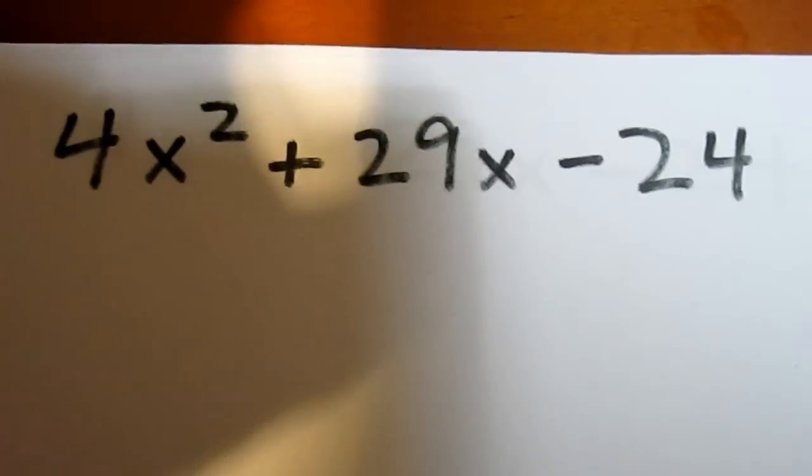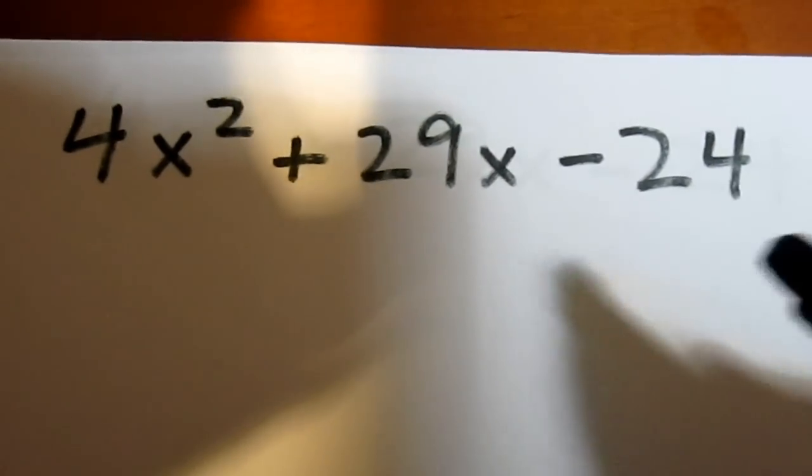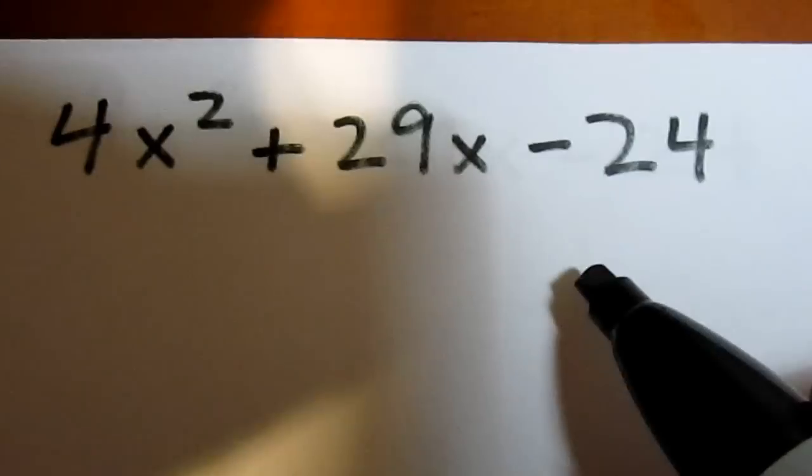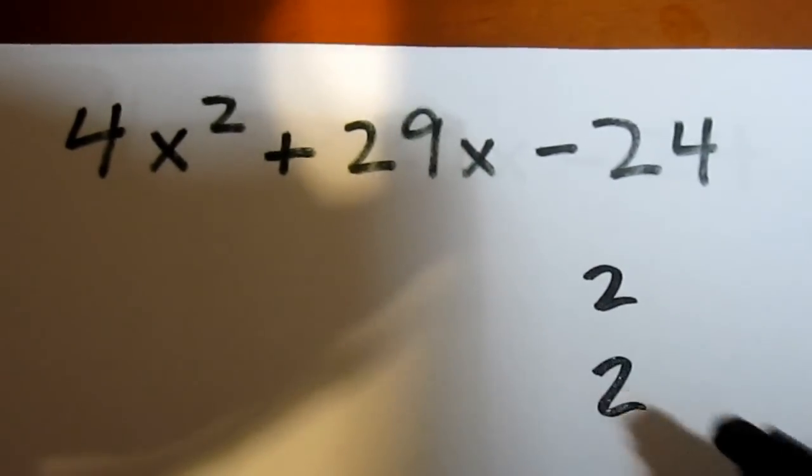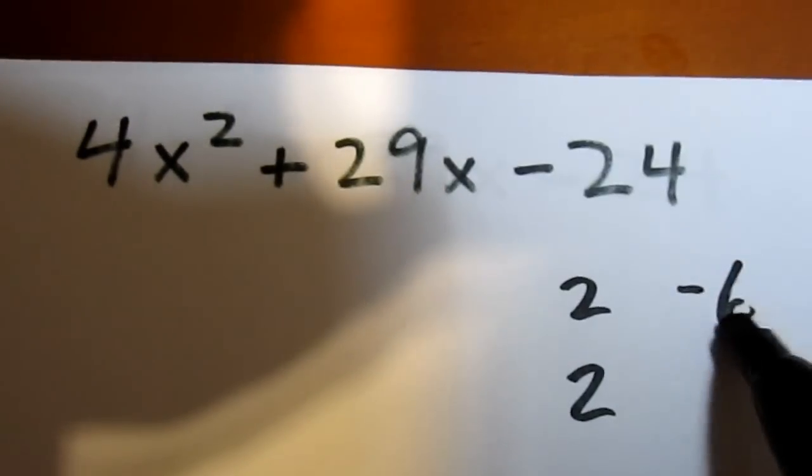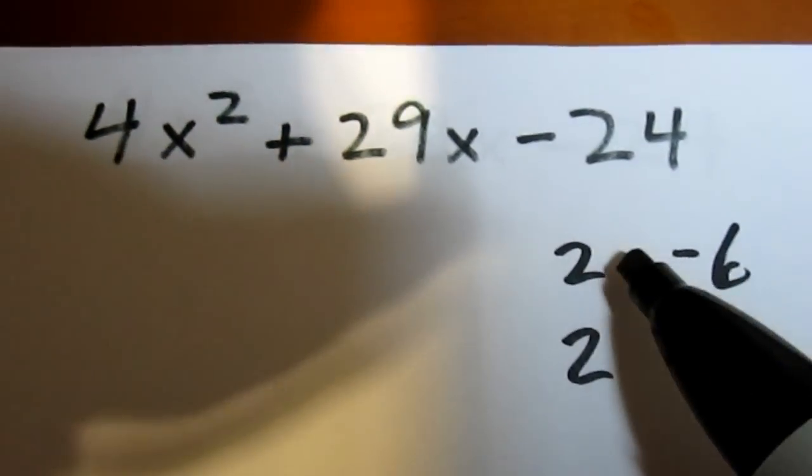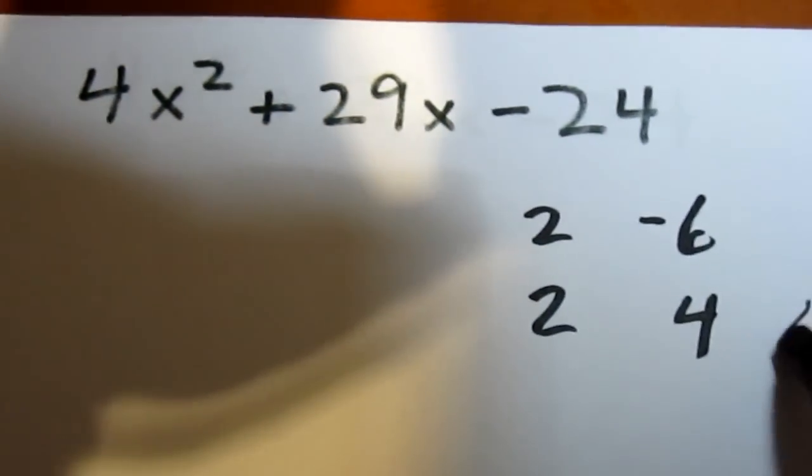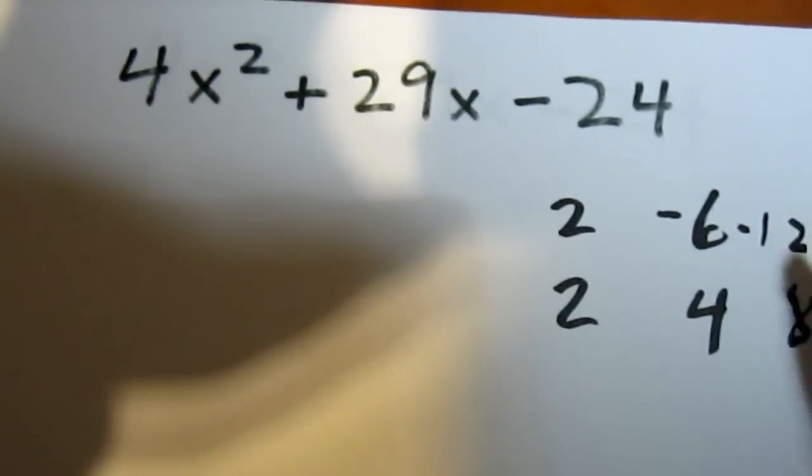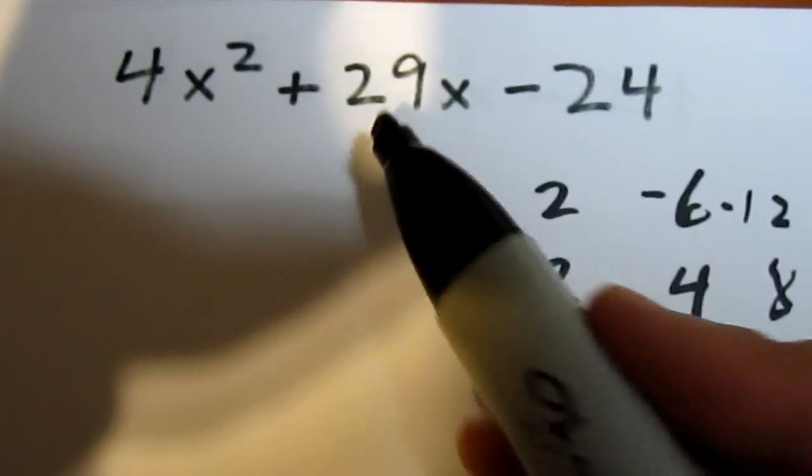We see that we want to have two numbers that multiply to 4, but we're probably going to try 2 and 2 first. Two numbers that multiply to negative 24, we could try negative 6 and 4. Well, 2 times 4 is 8, and 2 times negative 6 is negative 12, and negative 12 plus 8 definitely doesn't give me a 29.